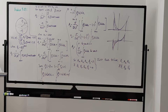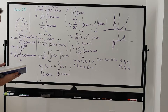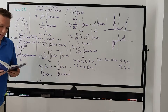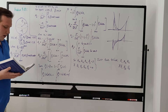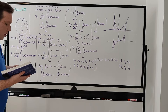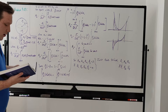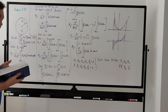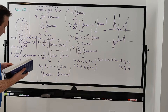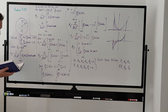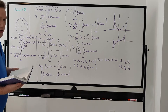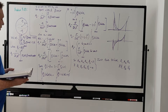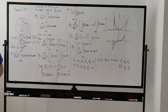Hello everyone, welcome to problem 3.23 of David Griffiths Electrodynamics. So, on today's problem it says a spherical shell of radius capital R carries a uniform surface charge of sigma naught on the northern hemisphere and a uniform surface charge of negative sigma naught on the southern hemisphere. It wants us to find the potential inside and outside of the sphere, calculating the coefficients explicitly up to a6 and b6. All right, so that's the problem statement.